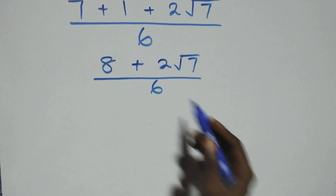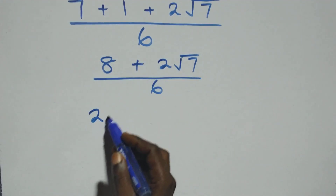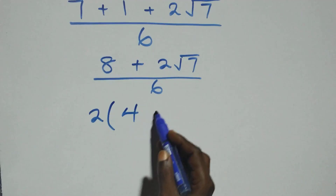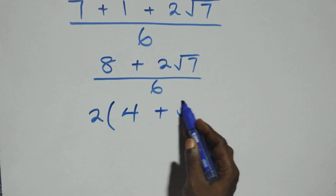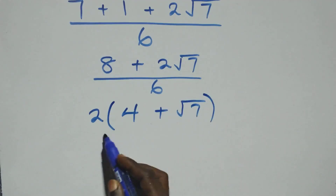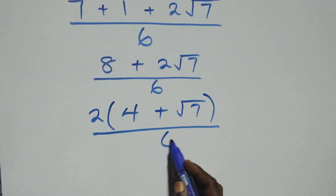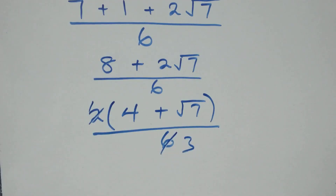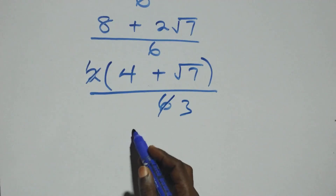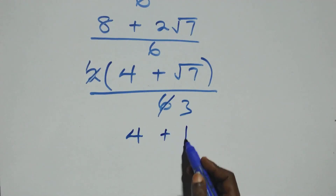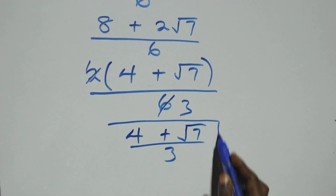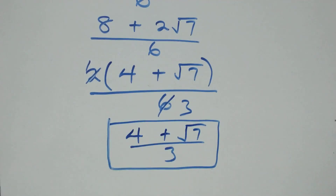Here, 7 plus 1 is 8, plus 2√7, over 6. And here, 2 is a common factor, we factor it out, and this becomes 2 into brackets — 4 left here, then plus √7 — over 6. That is, 2 and 6 cancel, giving (4 + √7) over 3, which is the simplified form of this given problem.